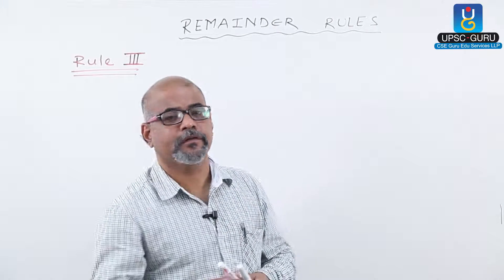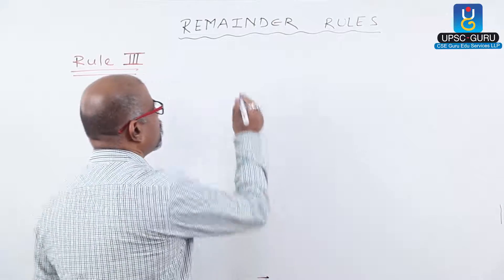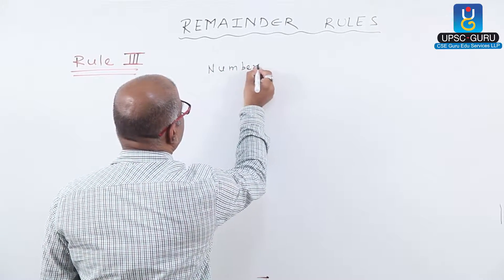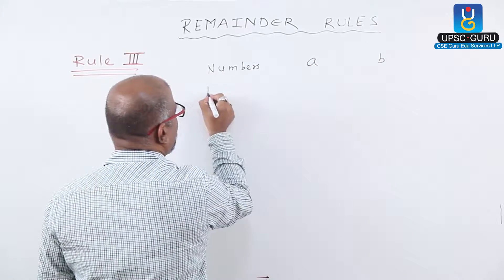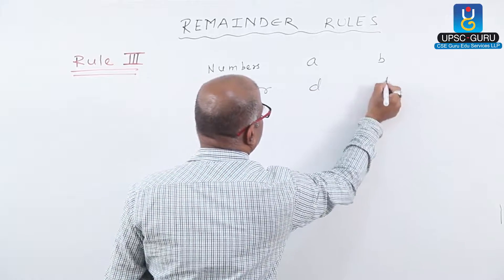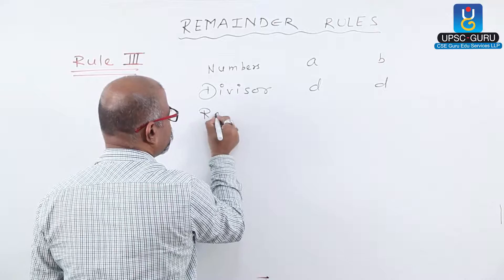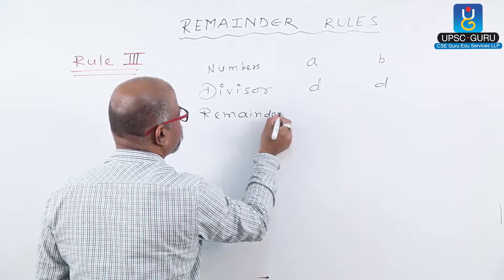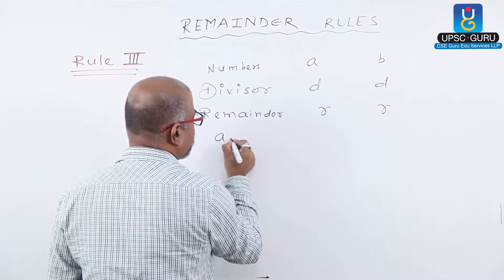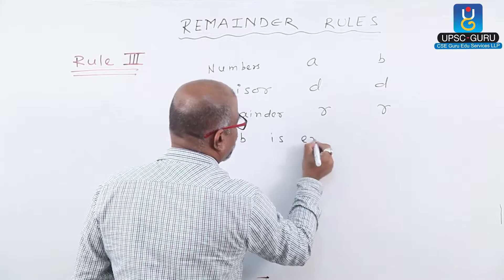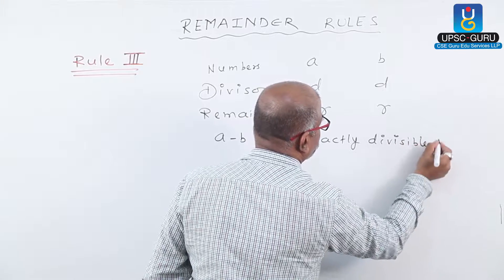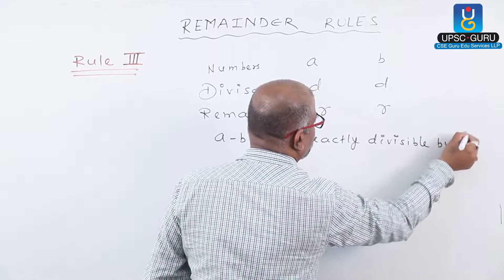Reminder rule number three. If two different numbers are divided by same divisor, let us consider numbers A and B are divided by same divisor D, gives us same remainder R. Then this rule says A minus B is exactly divisible by divisor D.